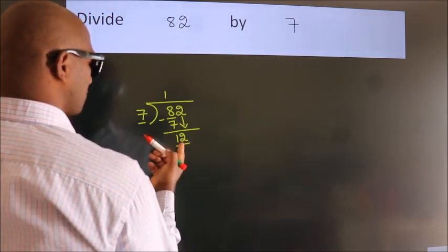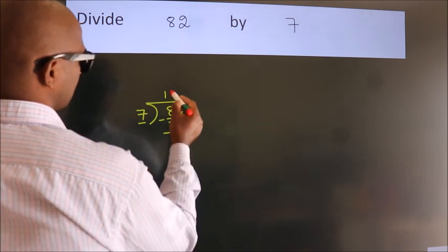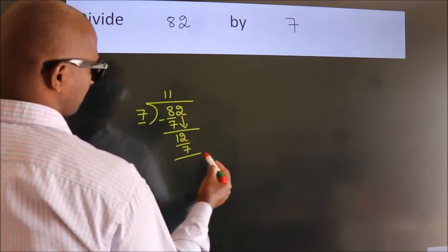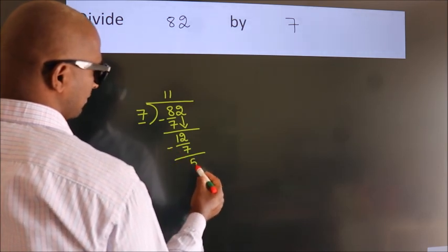A number close to 12 in the 7 table is 7 once 7. Now, we subtract. We get 5.